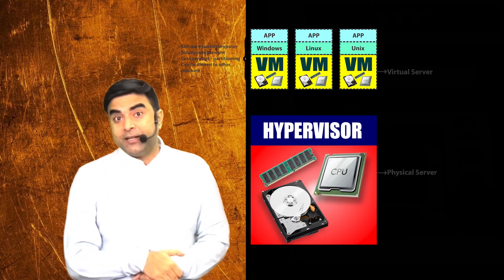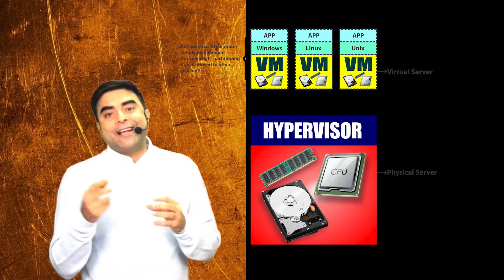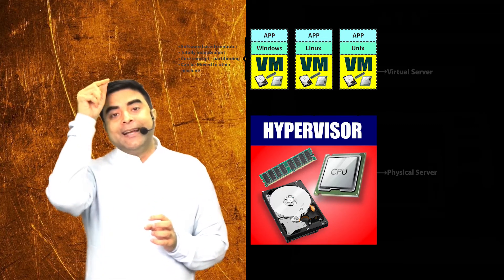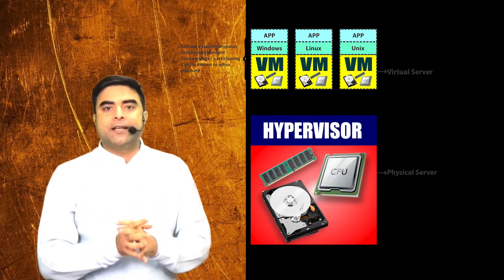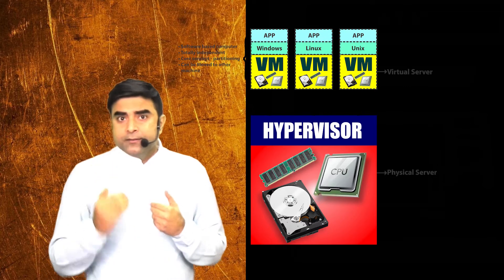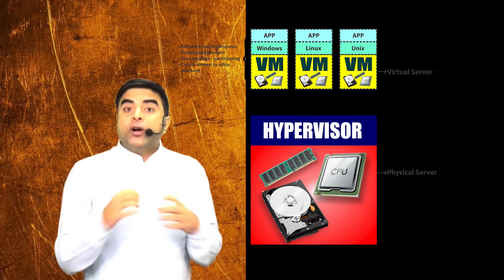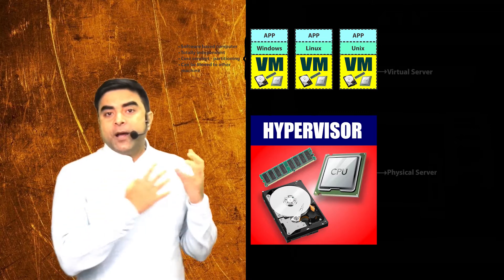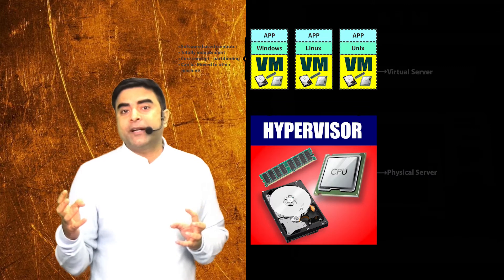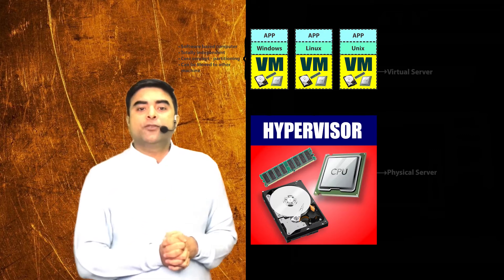The key point to understand is that when a request is initiated at the application level on a virtual machine, it ultimately goes to the physical machine for processing. Partitioning is happening — we have three different virtual machines, totally independent of each other and working independently, each with a different OS like Windows, Linux, and Unix, running different applications.